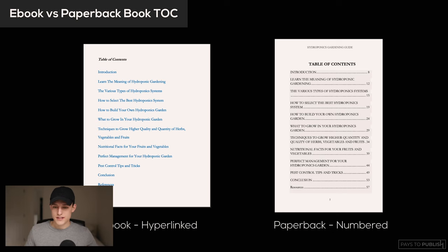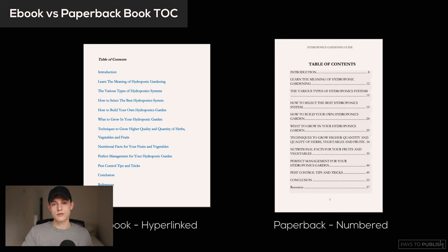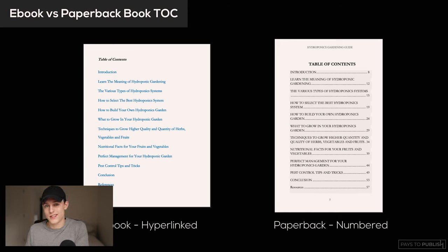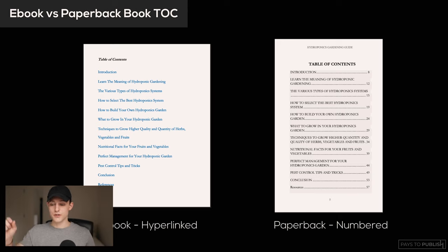Here are the two formats side by side. On the left, the ebook version has a hyperlinked table of contents — the links are blue so people can click and go directly to that section. On the right, the paperback version has numbered page references. You can also see the paperback is taller and skinnier because it's formatted to that 5x8 size, and there's a page number at the bottom.